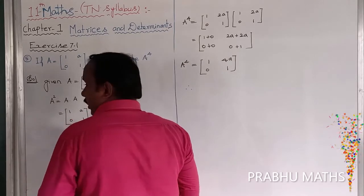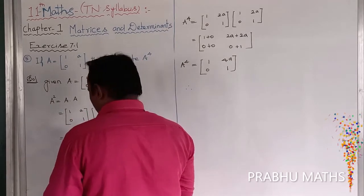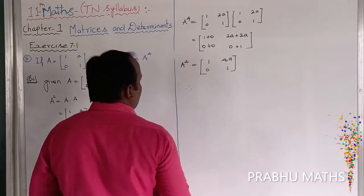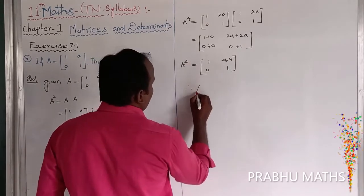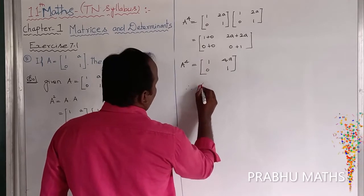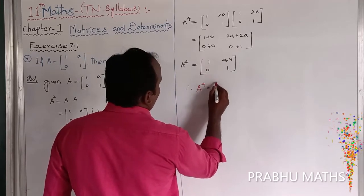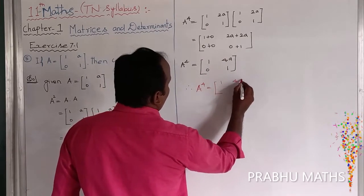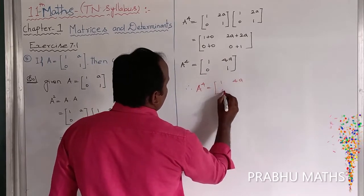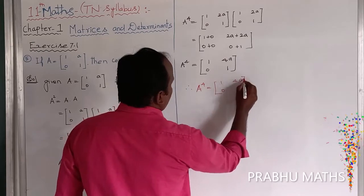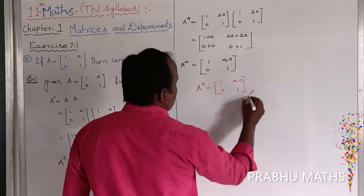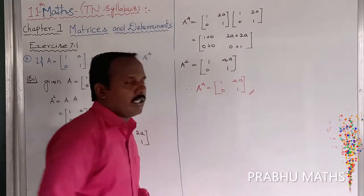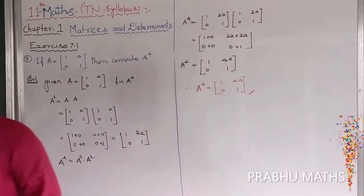Therefore, A power 4 is equal to [[1, 4a], [0, 1]]. That is the answer to the question.